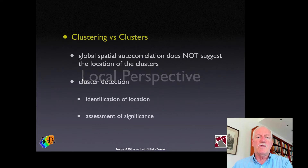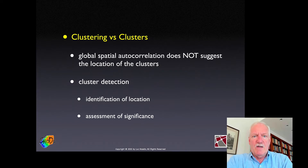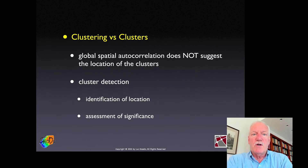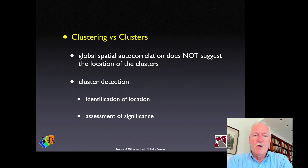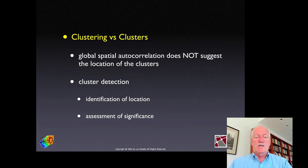So what is this local perspective? There is a major difference between clustering, which is a global perspective like global spatial autocorrelation or the clustering suggested by a K function. It tells us something about the characteristics of the point pattern, but it doesn't tell us anything about where the clusters might be. When we're interested in cluster detection, we want to find where they are — what is the location and what is their significance?